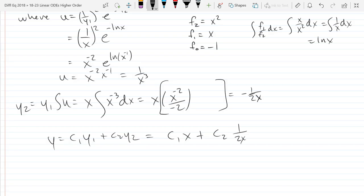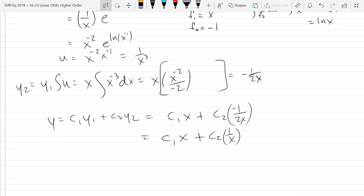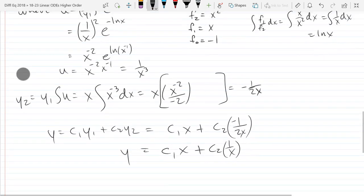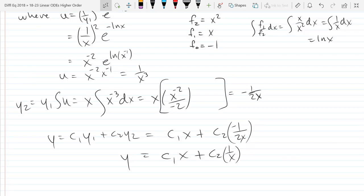We've got C1 Y1 plus C2 Y1 over 2X. I can reduce this constant down a bit. It should be negative here. We can rewrite it as C1 X plus C2 one over X. I just let my constant absorb the negative one-half right there.